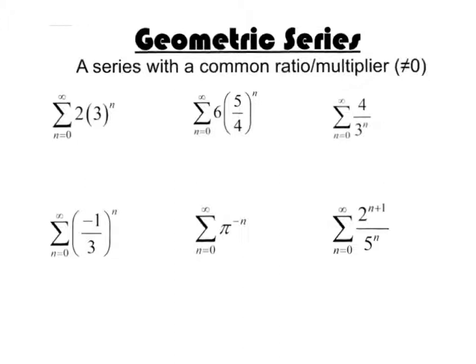A geometric series is one that has a common ratio or multiplier that's not equal to zero. So for example, this first question — if I plugged in zero and just list a couple terms here, I'd have 2 times 3 to the zero, which is 2.